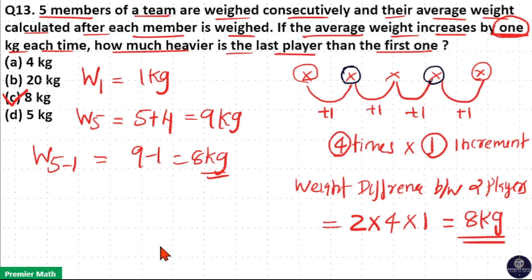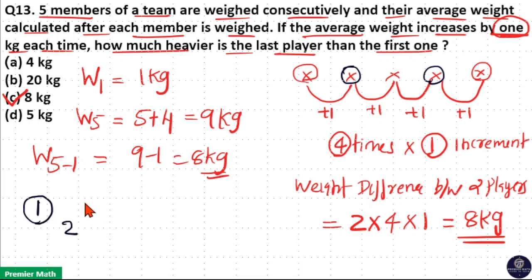If you have doubt, let us consider the weight of the 1st person as 1 kilogram. Then, average increases by 1 means 1 plus 1 equals 2 is the average. Now, 2 is the average means 2 into 2 equals 4, which will be the total sum of 2 players. So, the weight of the 2nd person will be 4 minus 1 equals 3 kilograms. Because 1 plus 3 is 4, and 4 divided by 2 is 2, which is the average.